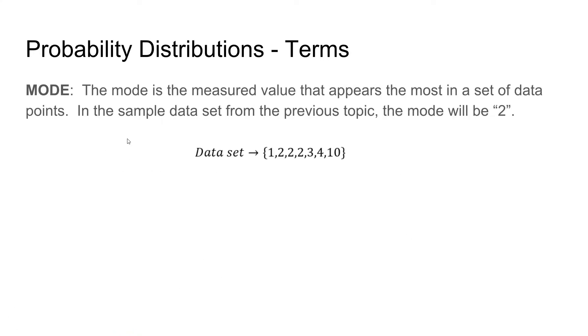The second term is mode. The mode is the measured value that appears the most in a set of data points. In the previous sample data set, the mode will be 2 since it appears 3 times, which is much more than any of the other data points.